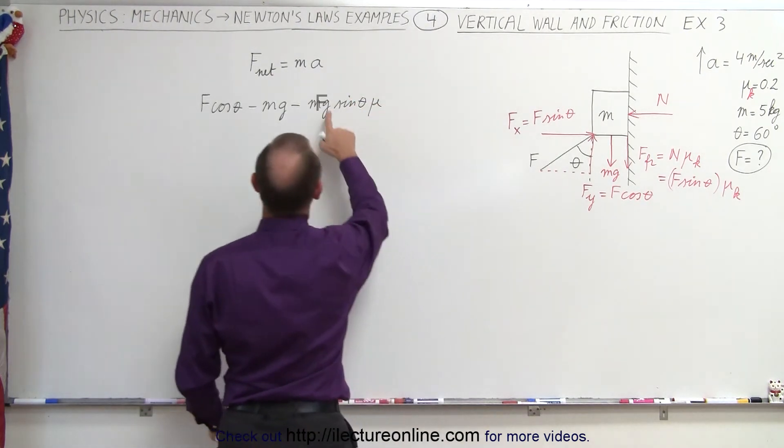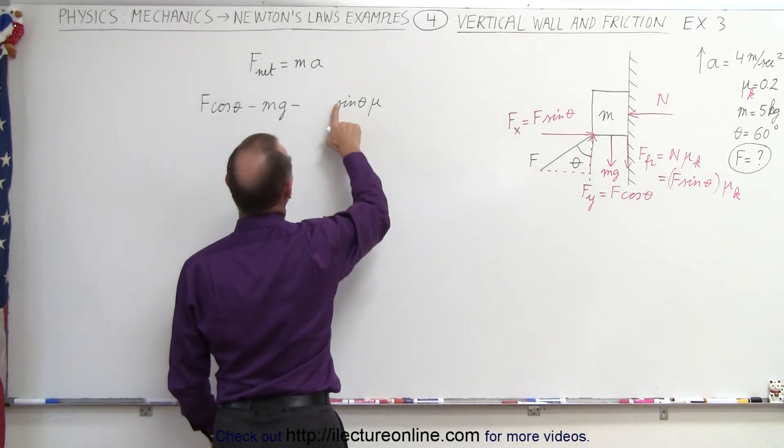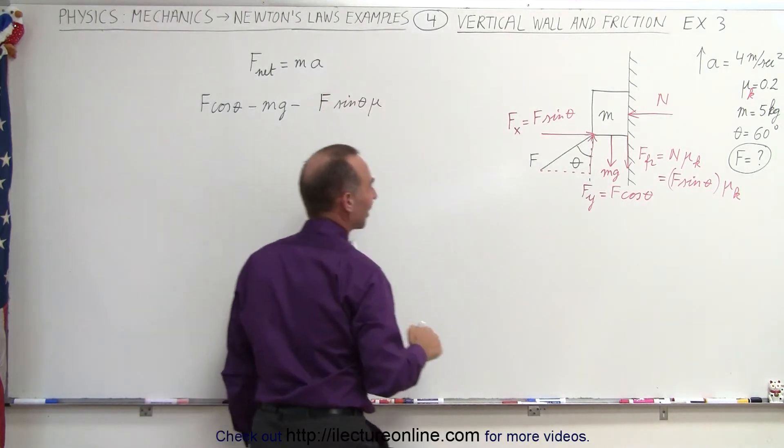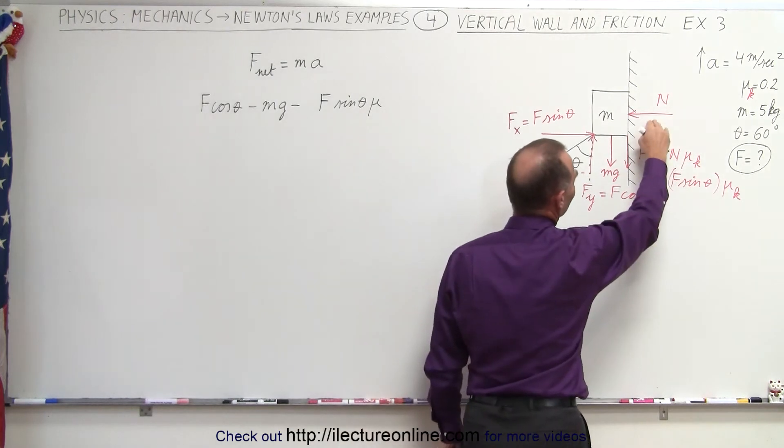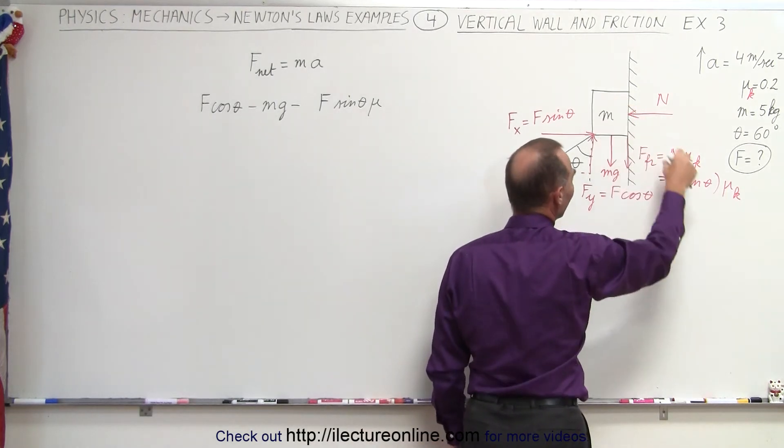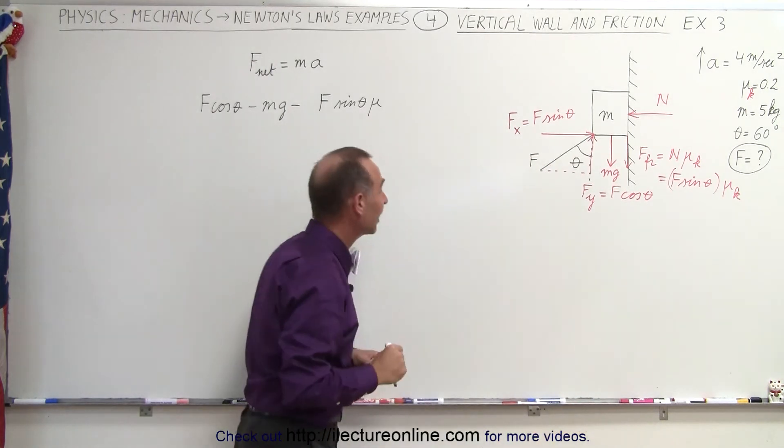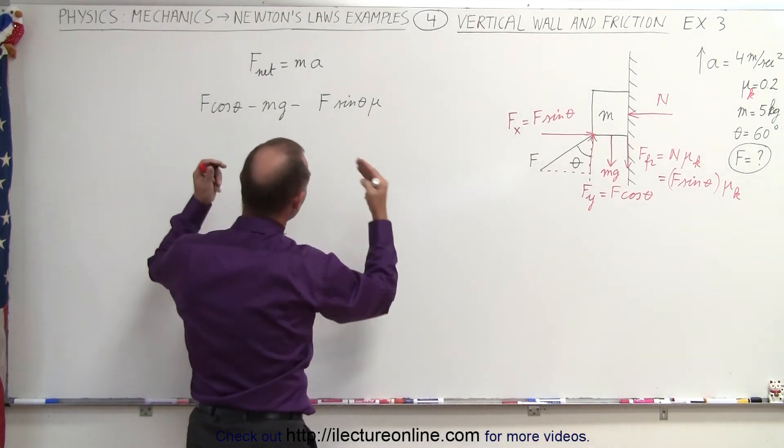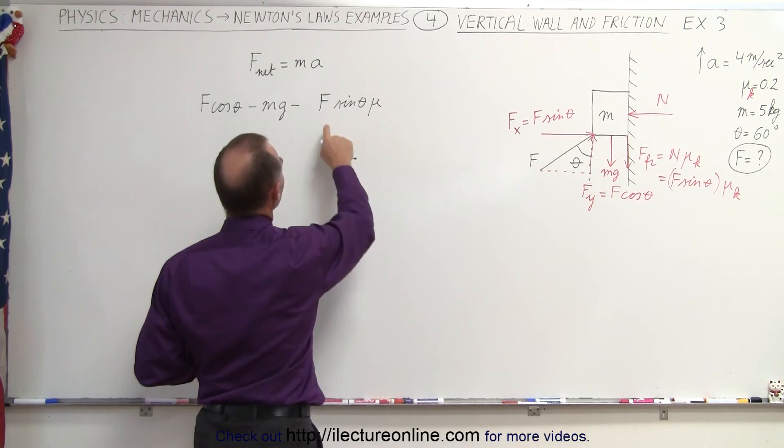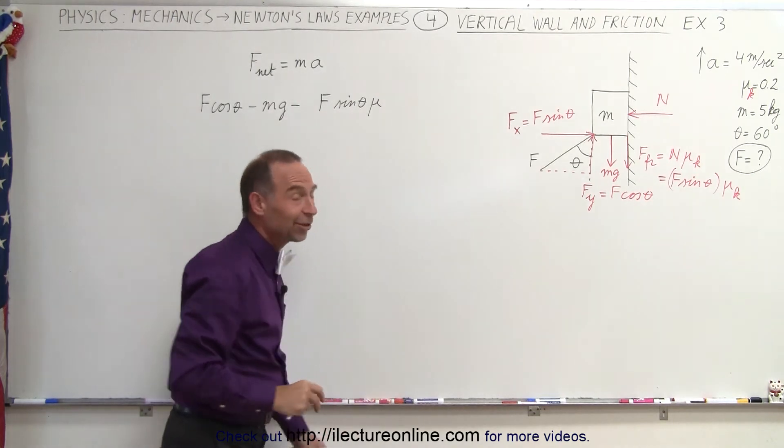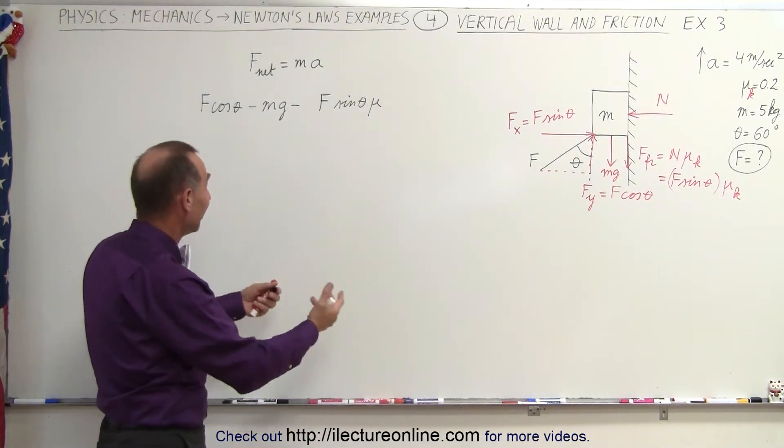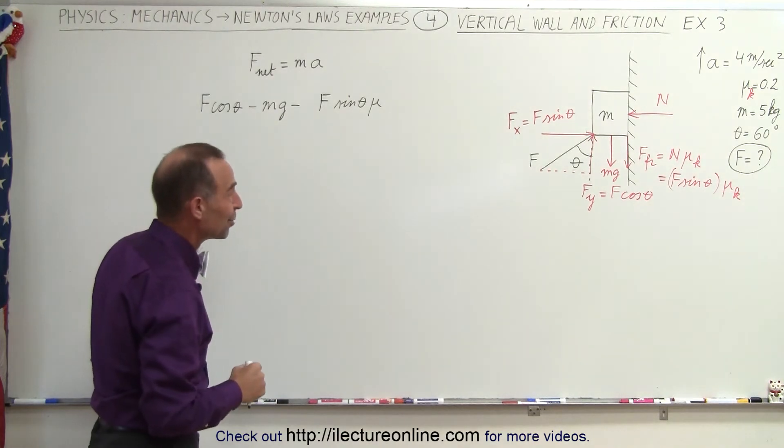Oops! Not mg. Let's try that again. It would be F times the sine of theta times mu, because in this case the normal force is not caused by the weight of the object, the normal force is caused by this. Notice how we constantly have to pay attention to what we're doing, because if we let our brain go to autopilot, it may put down the wrong things like I just did, because typically the normal force is the weight times an angle times mu.